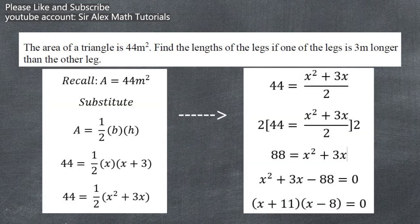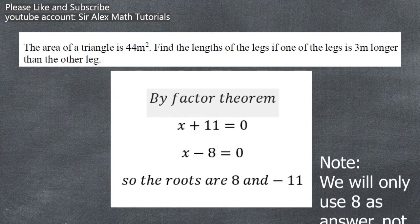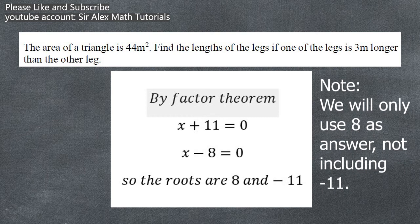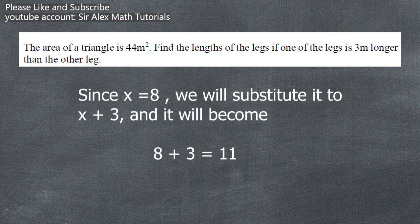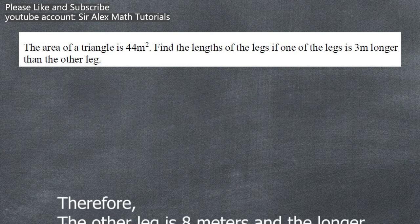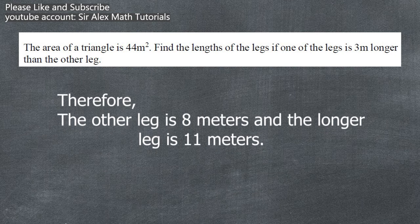In our solution, we found two roots: negative 11 and positive 8. Since we are dealing with measurements, we can only take the positive value, so x equals 8. Since the longer leg equals x plus 3 and x equals 8, the longer leg is 8 plus 3 equals 11. So the lengths of our legs are 8 meters and 11 meters. By checking: 8 times 11 equals 88, divided by 2 equals 44. Our answer is correct.